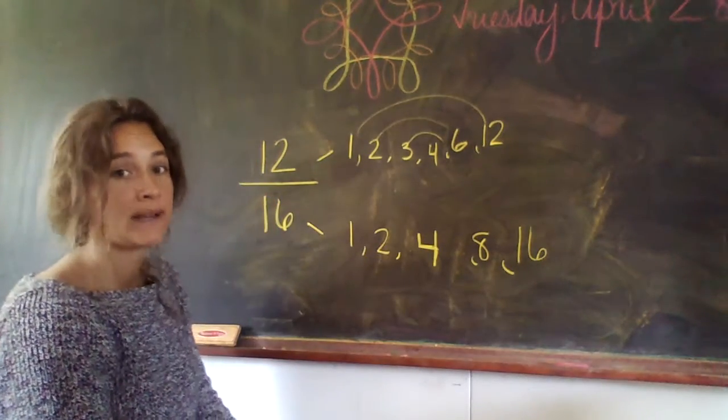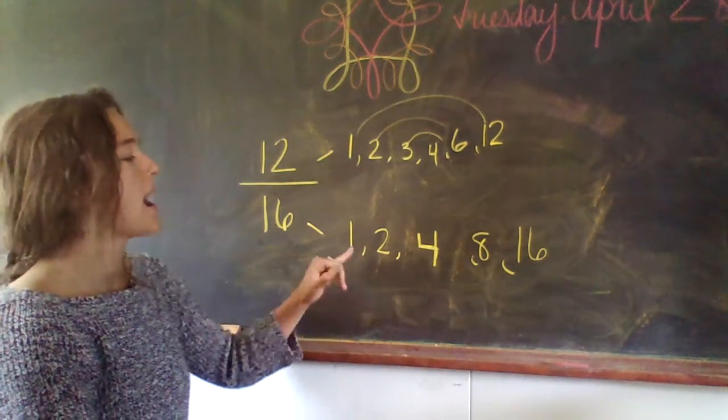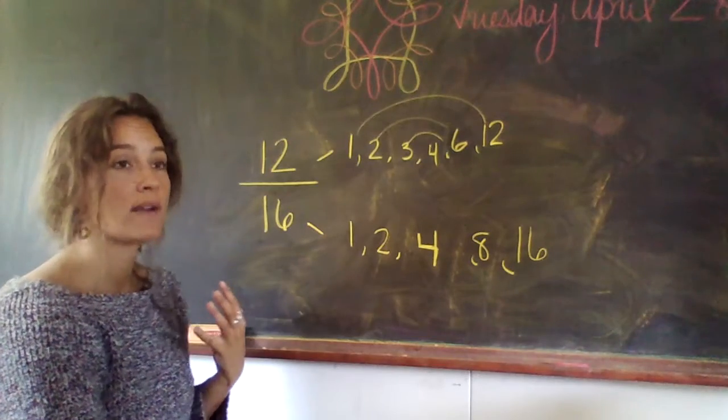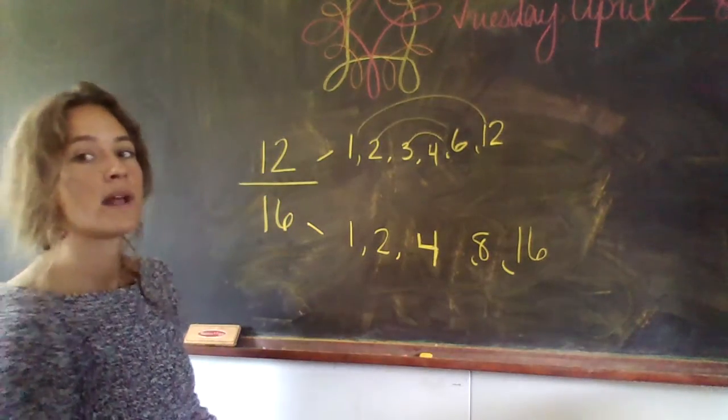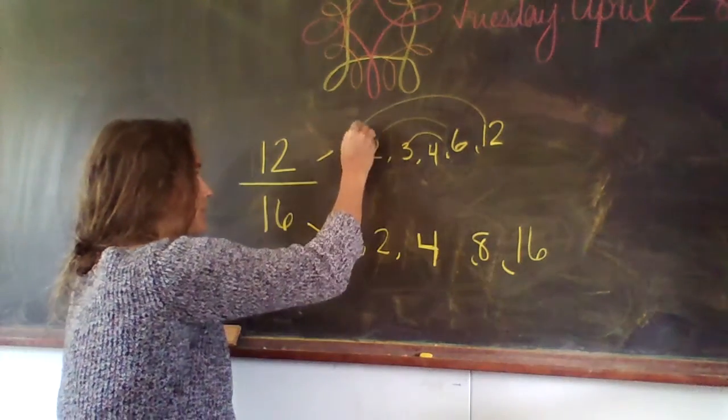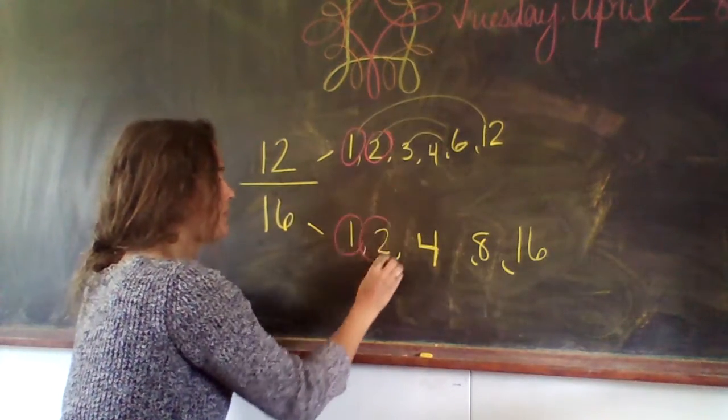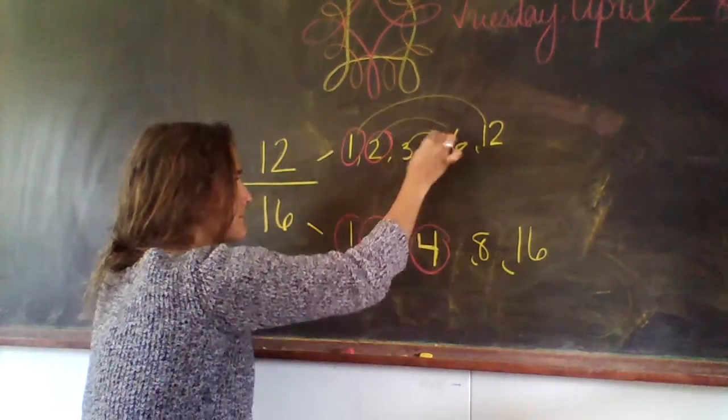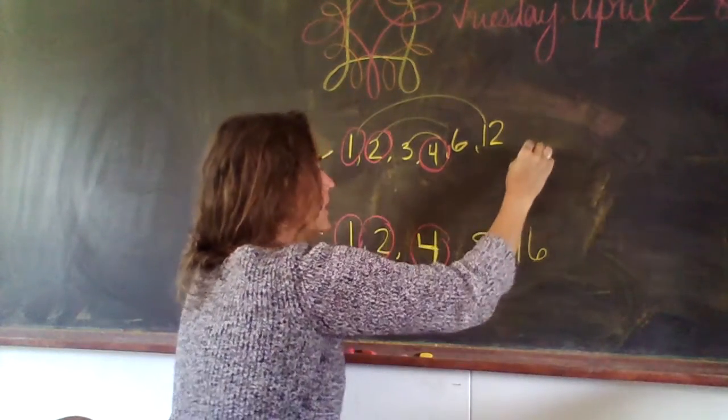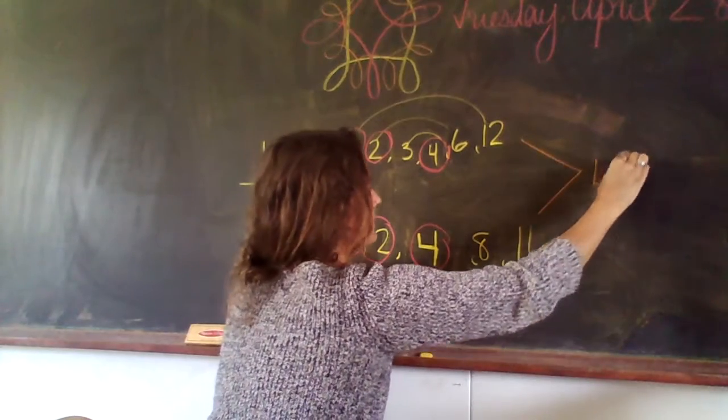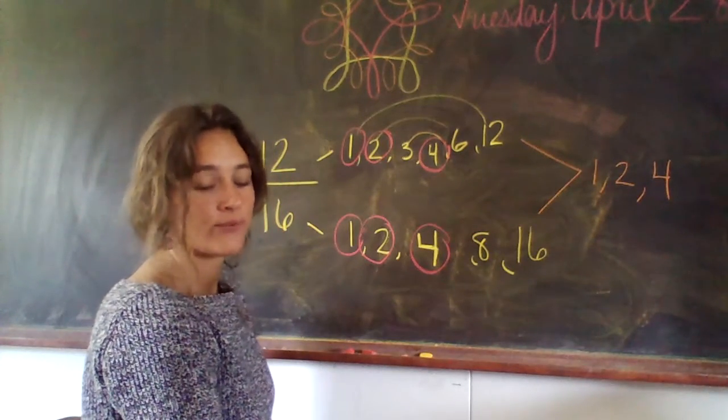4 goes into it how many times? 4. So I only have to write 4 once. Here are my factors for both. Now we need to find the common factors, not the greatest common factor, just the common factors. The ones that are twins or the same: 1, 2, and 4.